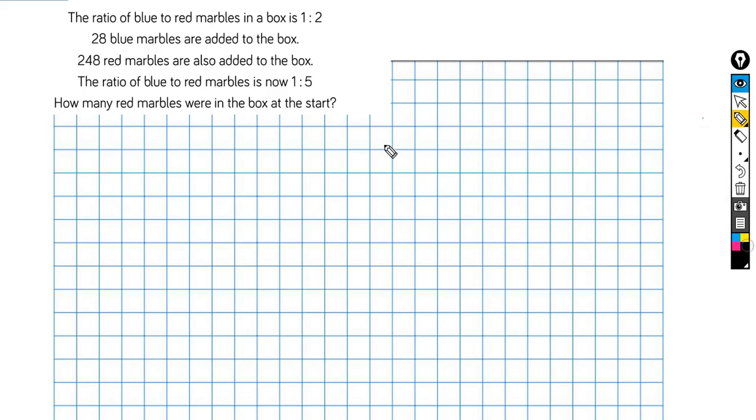Now let me just show you how I would start. I've got two colours going on, I've got a ratio involved, I am going to do what's called a comparison model. So there's blue, this is going to represent red.